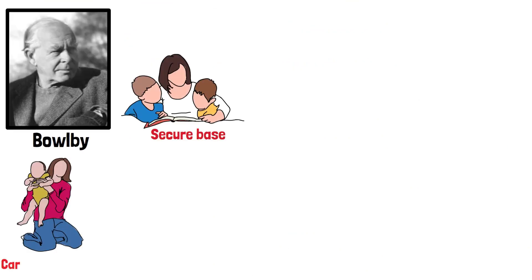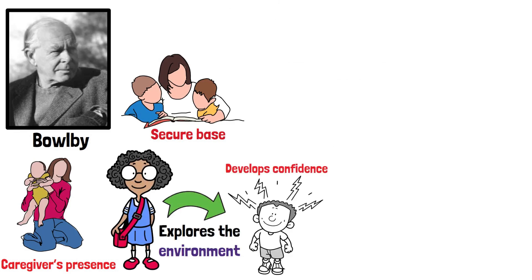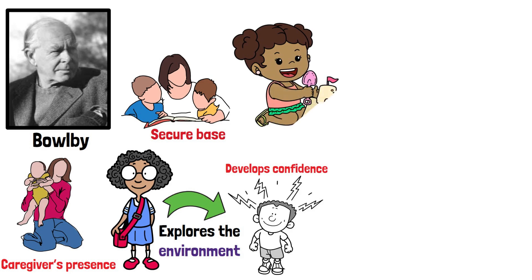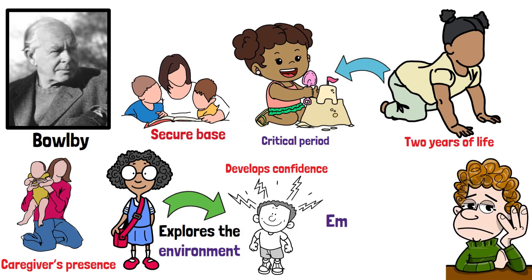Bowlby introduced the concept of a secure base, suggesting that a caregiver's presence provides a foundation from which a child explores the environment and develops confidence. He also emphasised the critical period — a window in the first two years of life where the attachment system is most active. Disruption during this period, Bowlby argued, could lead to emotional and developmental issues.